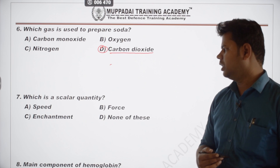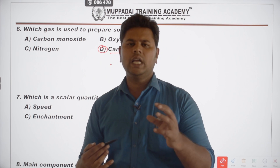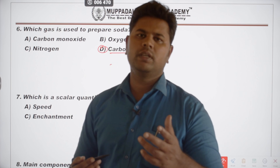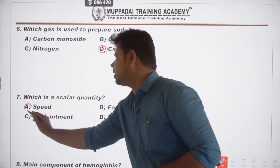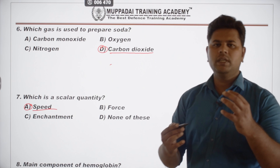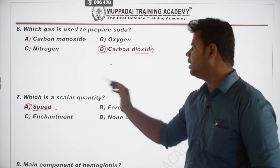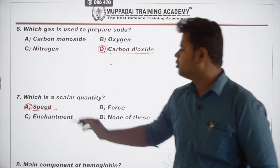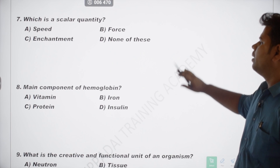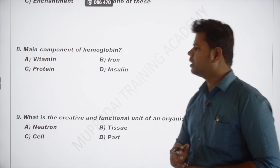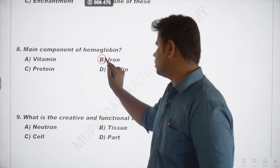The seventh question: which is a scalar quantity? Physical quantities are measured in two types: scalar quantity and vector quantity. Scalar quantity means a physical quantity measured by magnitude only — for example, speed. Vector quantity is measured by both magnitude and direction.